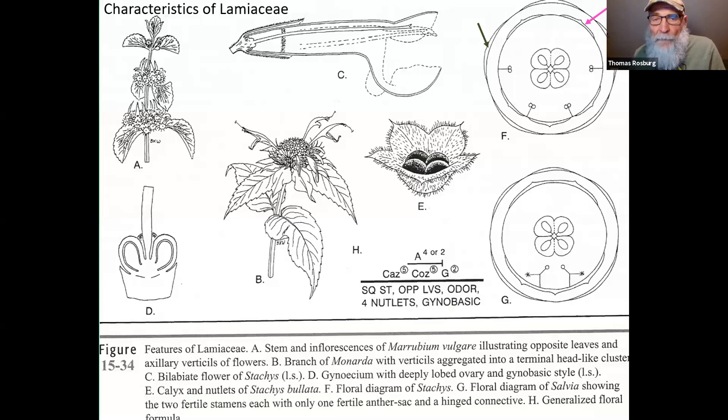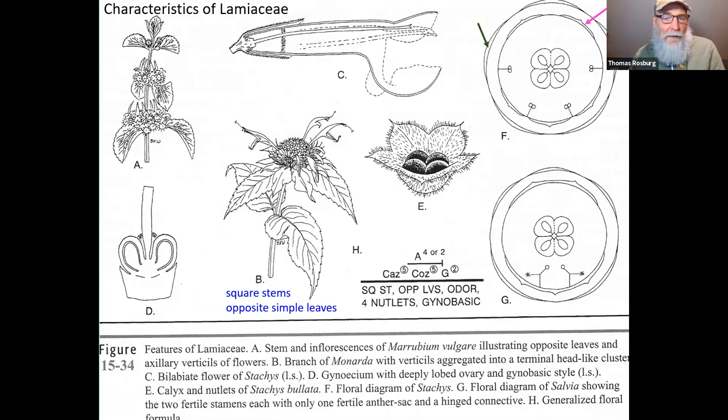Let's start with some characteristics of the mints. This is a nice diagram from the textbook Vascular Plant Taxonomy, which I use for field botany. Obviously the square stems and opposite simple leaves — all mints have opposite simple leaves and pretty much square stems, though some are very strongly square-stemmed or more weakly square-stemmed depending on how rigid those angles are.